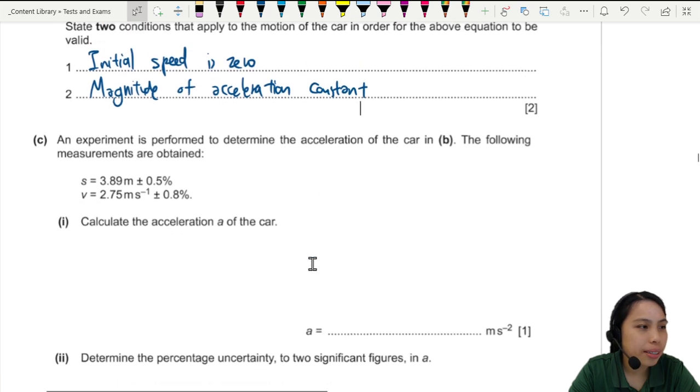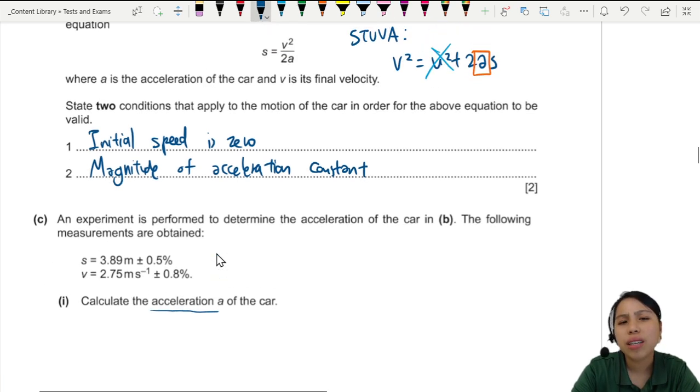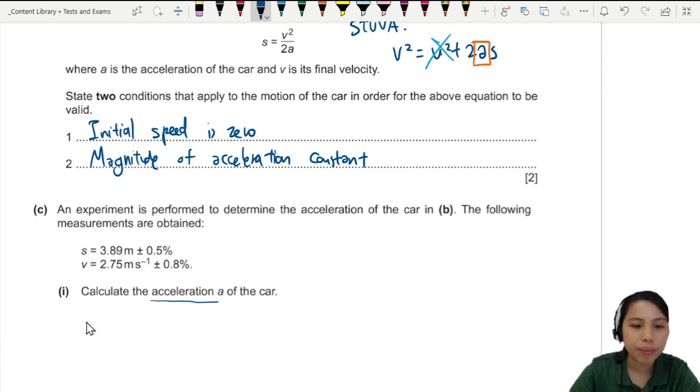Let's go on. Here we go to some uncertainty question now. So experiment is performed to determine the acceleration. And we got these measurements. Calculate the acceleration. So they give us the equation. You stay calm. Press calculator. Let's rearrange a bit, shall we? A equals to V squared over 2S. So that's our friend there. Let's plug it in.